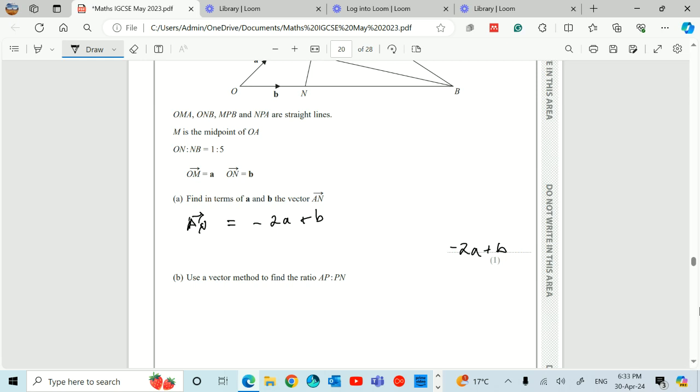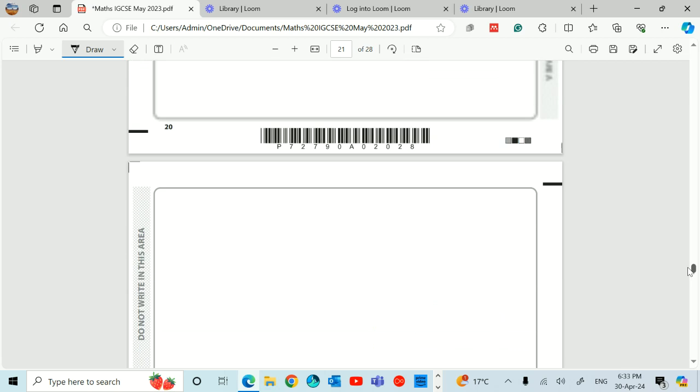Use a vector method, part B. Use a vector method to find the ratio AP to PN. Now this is a little bit more tricky. And of course it's going to be tricky because it's five marks for that question.